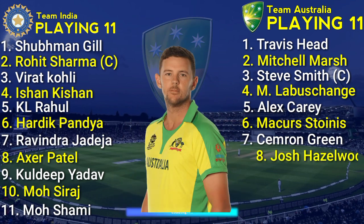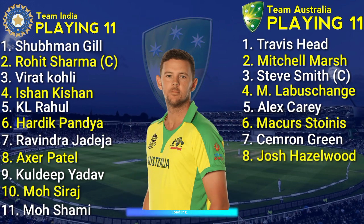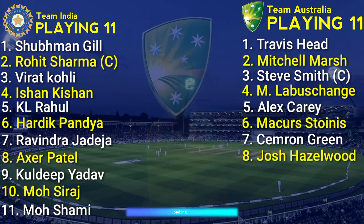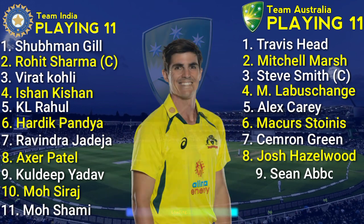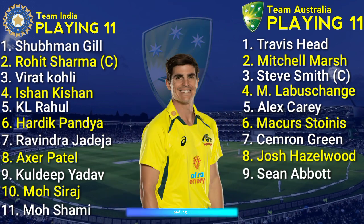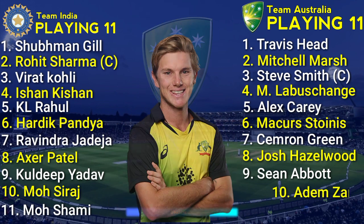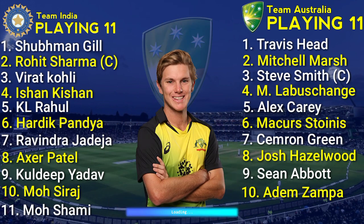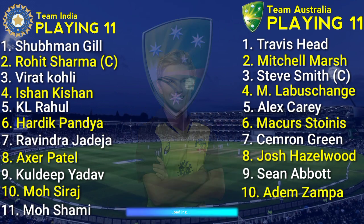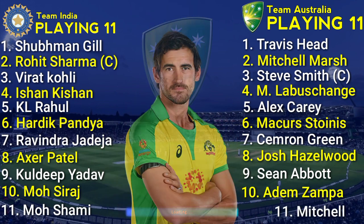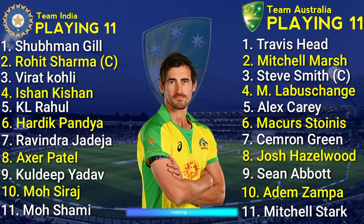Team Australia Bowlers: No.8 Josh Hazlewood, Right Hand Fast Bowler. No.9 Sean Abbott, Right Hand Fast Bowler. No.10 Adam Zampa, Right Hand Spinner. No.11 Mitchell Starc, Left Arm Fast Bowler.